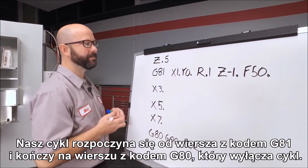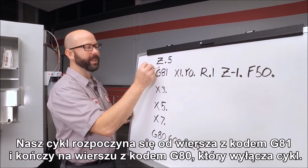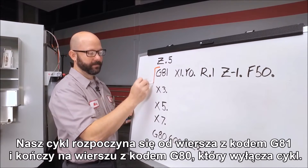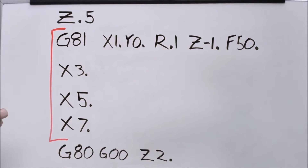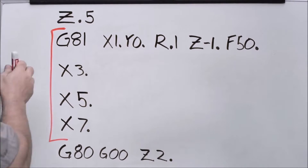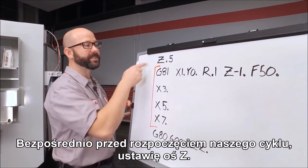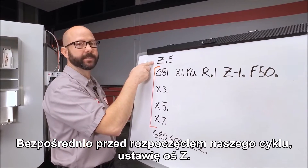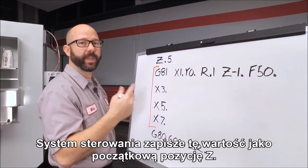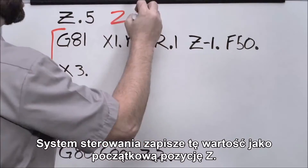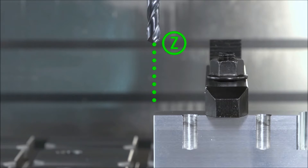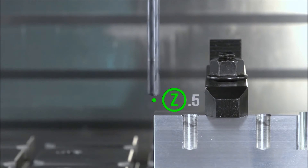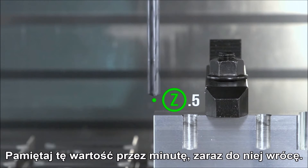Our CAN cycle starts with our G81 line and goes all the way until we cancel it with the G80. Just prior to our CAN cycle, we positioned our Z axis. The control is going to store that value as our Z starting position. Just lock that value in your memory for a minute — we'll come right back to it.